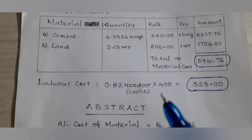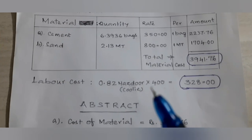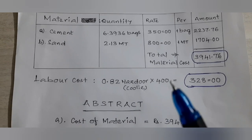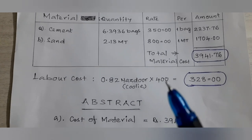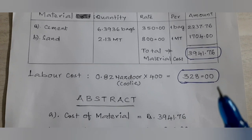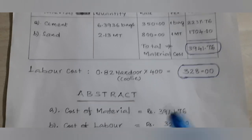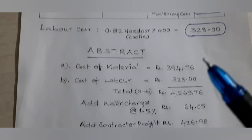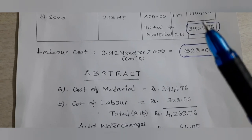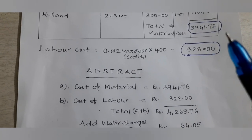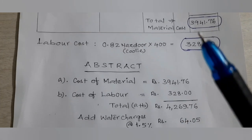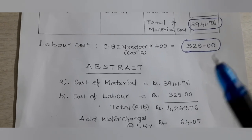For labor cost: the rate per day for a helper is 400 rupees. Total workers required are 0.82, giving a labor cost of 328 rupees. So the abstract cost of material is 3941.76 rupees and labor cost is 328 rupees.